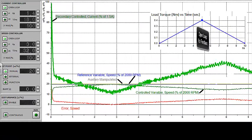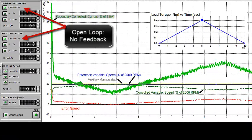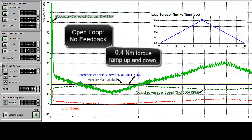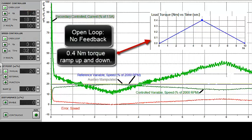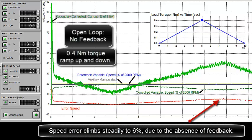This is open loop, there's no feedback. 0.4 Nm torque ramps up and down. The speed error climbs steadily to 6% due to the absence of feedback.